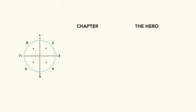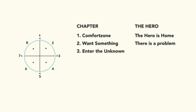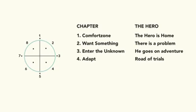Let's explain the chapters of the hero. Chapter one is the comfort zone — the hero will be at home, and so is the audience, the listener, the watcher, the viewer. Number two: he wants something, or you want something — the hero has a problem and needs a solution. Then to find that solution, he needs to go into the unknown, so he goes on an adventure. To do so, he has to adapt — and that's a road of trials.